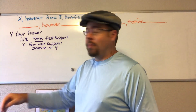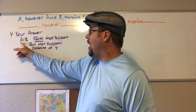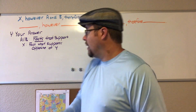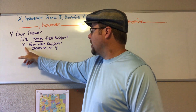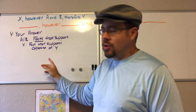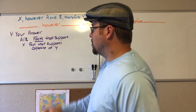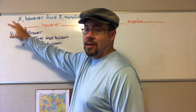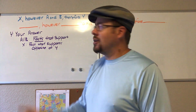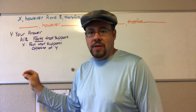So what does the formula stand for? Y is your answer — it is the answer to the question. A and B are facts that support your answer. And finally, X — and this is tricky — X is a fact that supports the opposite of your Y. A lot of students want to take the X and just make it the opposite of their Y. When they do that, they wind up with a weird sentence that goes, 'yes, however A and B, therefore no.' They basically wind up saying two different things. It's a fact that supports the opposite of the Y — it's not a statement of the opposite of the Y.